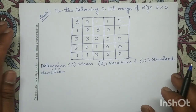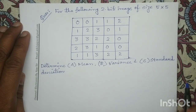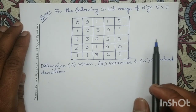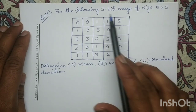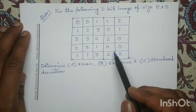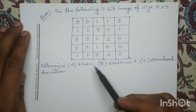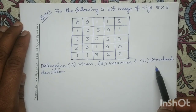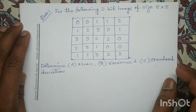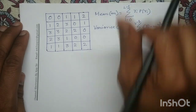Good morning all. This question is related to histogram statistics. A 5x5 input digital image is given to us. It is a 2-bit image and for this image we have to determine the mean, the variance, and the standard deviation of this image. To solve this question there are two methods.